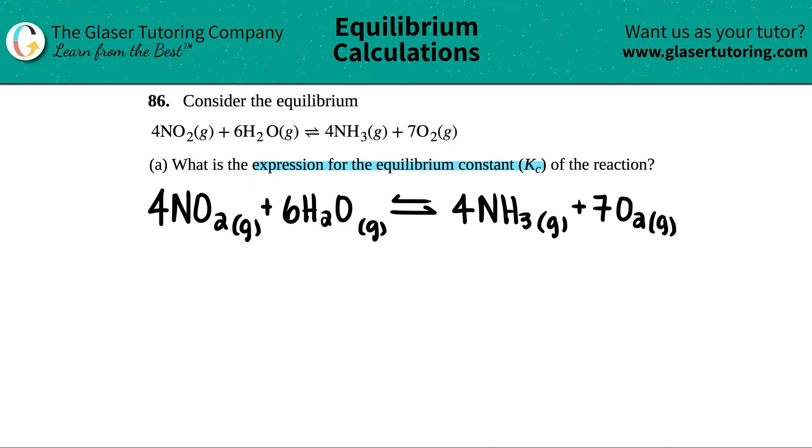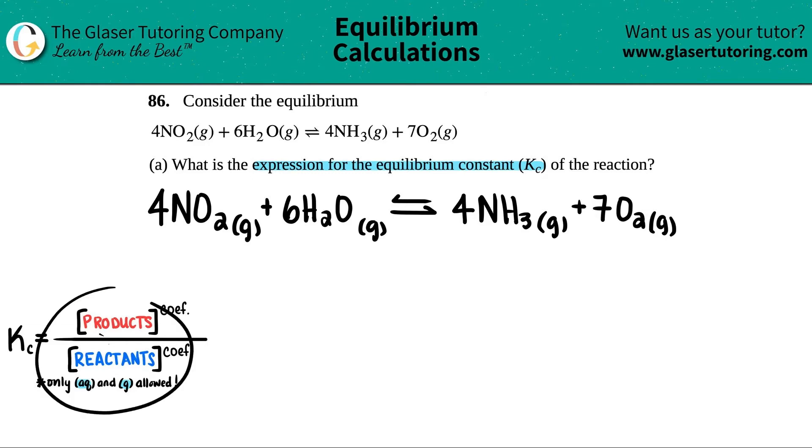We know that formula, right? The general Kc formula is Kc equals the concentration of the products divided by the reactants raised to the coefficients. Only aqueous and gases are allowed in this expression, so just look for those states. But in this case it looks like we have all gases, so all of these will be included.